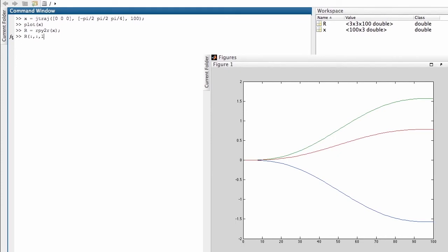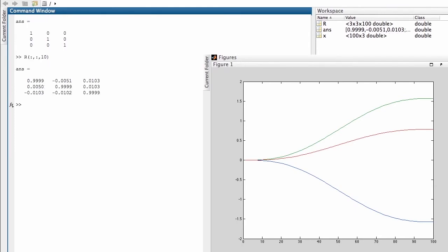We can look at the first one in that stack and it's a rotation matrix that looks like this. It's a null rotation. It's a unit matrix. I can look at the tenth one in this stack and it looks something like this.